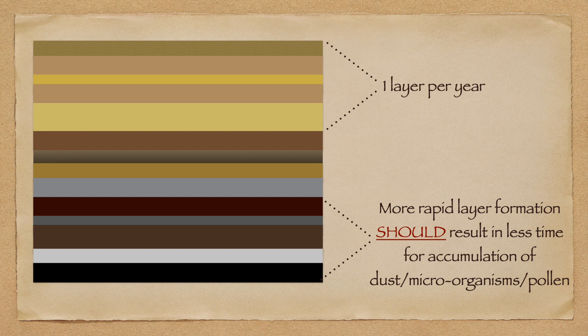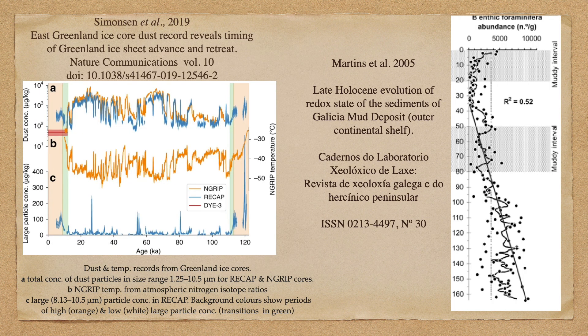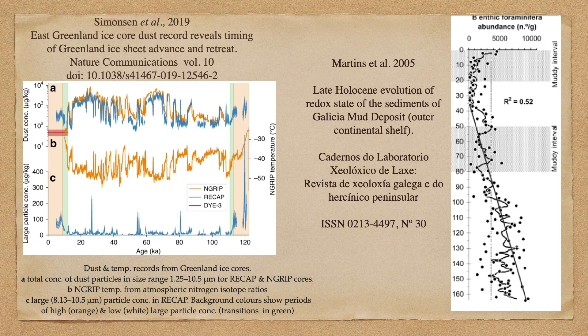So let's consider the Young Earth Creationist position. In each of these records, the Young Earth Creationists claimed that the early layers were formed very rapidly indeed. But the more rapidly these layers formed, the less time there is for pollen, or dust, or microorganisms to accumulate in each layer. As a result, we would expect that in the deeper layers, there is less dust, less pollen, and fewer microorganisms to be found. But that isn't what's observed. Sure, there are some small fluctuations, but nothing as dramatic as what we would expect from the Young Earth Creationist timeline.